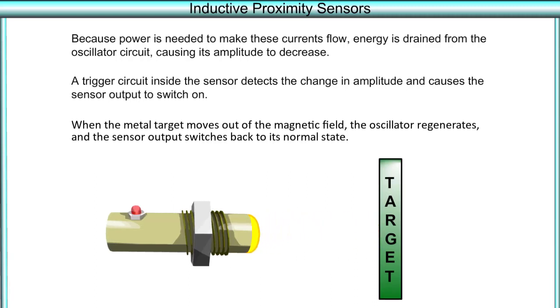When the metal target moves out of the magnetic field, the oscillator regenerates and the sensor output switches back to its normal state.